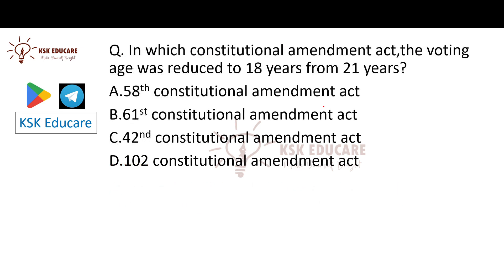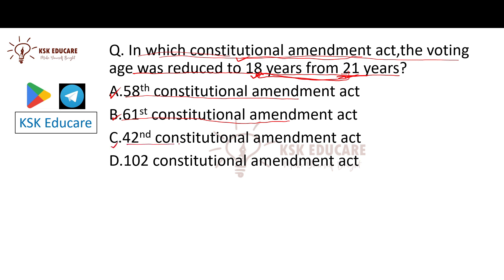Next question: In which Constitutional Amendment Act was the voting age reduced to 18 years from 21 years? Option A is the 58th Constitutional Amendment Act, Option B is the 61st Constitutional Amendment Act, Option C is the 42nd Constitutional Amendment Act, and Option D is the 102nd Constitutional Amendment Act.